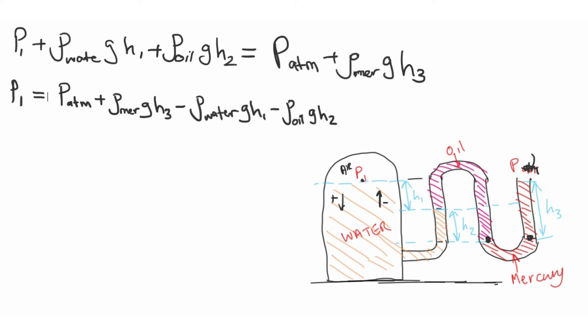This will give us the absolute pressure. But the question requires a gauge pressure. So we have to subtract P1 by the atmospheric pressure. So P gauge is equal to P1 minus P atmospheric. Then we equate this to rho of the mercury times g times h3 minus rho of the water times g times h1 minus rho of the oil times g times h2.